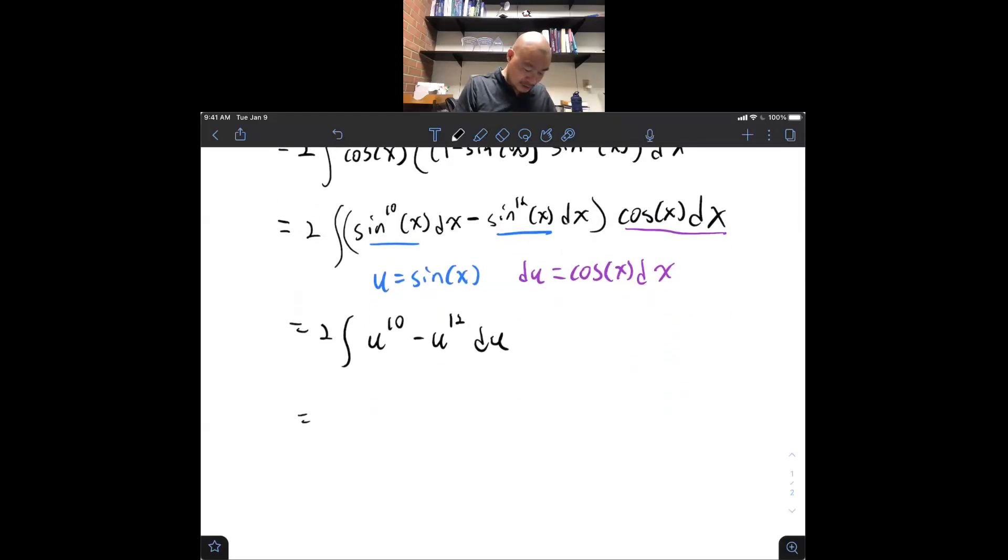Which is 2 u to the 11th over 11, minus 2 u to the 13th over 13, plus c.